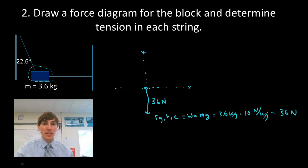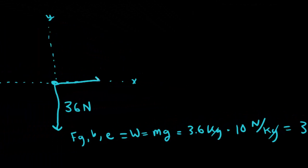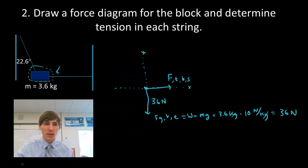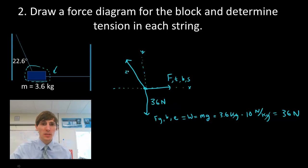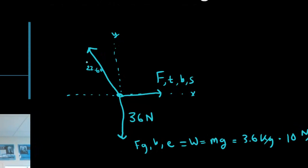Pulling to the right along the x-axis is another string. When dealing with strings, we call that a tension force — force of tension, when atoms are stretching, acting on the block by the string — acting along the string to the right. The last force to draw is the pull from the other string, which is at an angle. I'll draw that angle, and I know it's pulled at 22.6 degrees from that wall surface.